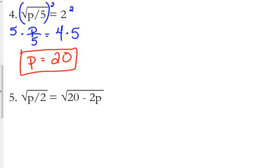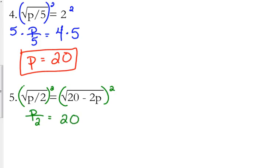Number 5 has a square root on both sides. There are two ways of looking at this. If you have a square root on both sides and there's nothing outside of those square roots, the only way for this equation to be equal is if what's under the square root on each side is equal to each other. Or you can look at it from the perspective of what we've been doing — to get rid of a square root, you square both sides, which removes the square root from both sides.